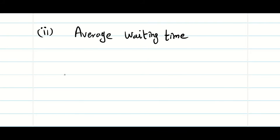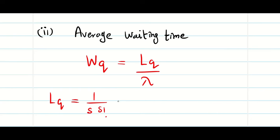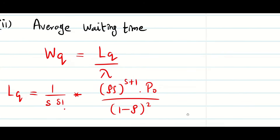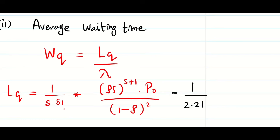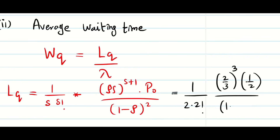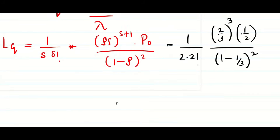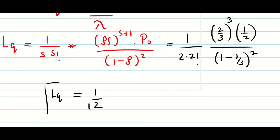Question 2: average waiting time wq = lq / λ. The formula for lq is: (1/(s × s!)) × (ρs^(s+1) × P₀) / (1 − ρ)². Substituting: (1/(2 × 2!)) × (2/3)³ × (1/2) / (1/3)². Simplifying gives lq = 1/12.